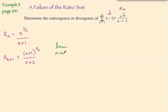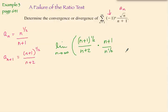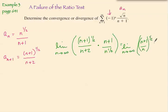The limit as n approaches infinity of n plus 1 to the 1/2 power over n plus 2, times the reciprocal of the original term, which is n plus 1 over n to the 1/2 power. Let's rewrite this: notice we have n plus 1 to the 1/2 and n to the 1/2, so we can combine those into one term. Now we're looking at the limit as n approaches infinity of n plus 1 over n to the 1/2 power, times n plus 1 over n plus 2.